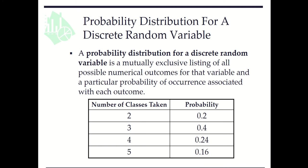A probability distribution for a discrete random variable is a mutually exclusive listing of all possible numerical outcomes for that variable and a particular probability of occurrence associated with each outcome. Here we consider the number of classes taken by a student. The number could be 2, 3, 4, or 5 with probabilities 0.2, 0.4, 0.24, and 0.16 respectively.